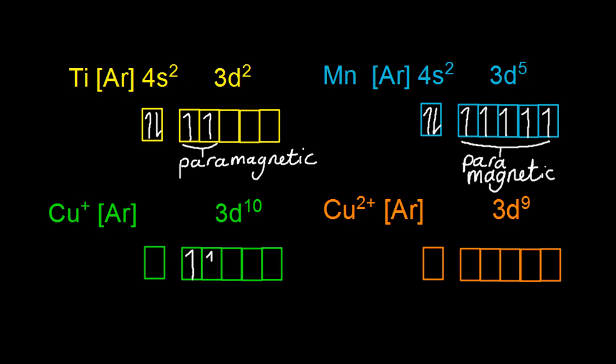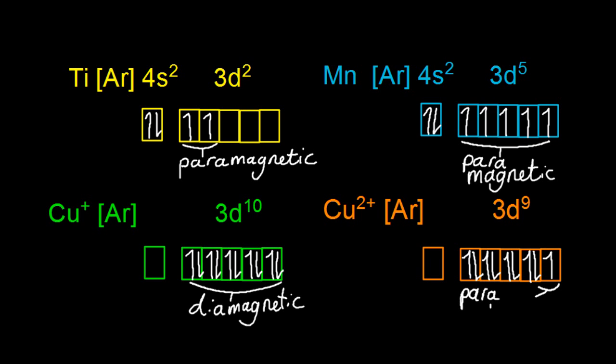Copper plus, that has no lone electrons in orbitals, only has paired electrons, so that's diamagnetic. That's actually slightly repulsive towards magnets. But copper two plus, that has one lone electron, and so that is going to be paramagnetic.